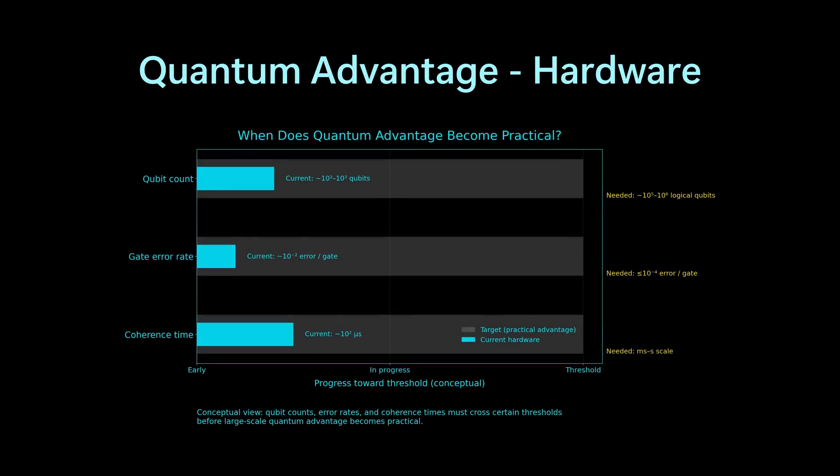The current issue with quantum systems is hardware. Decoherence, noise, and logical qubit count are the current issues. We'll discuss this in depth in future videos, but for now, the chart below drives the point home. Quantum hardware has a bit to go.